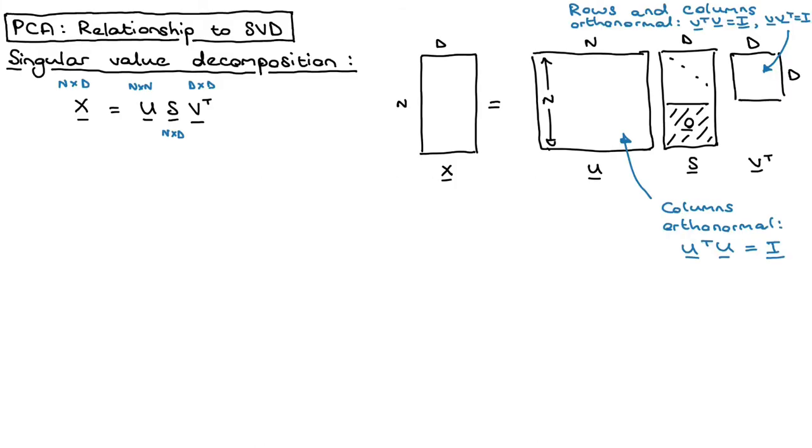Singular value decomposition, if you go on Wikipedia, you will see that it's a generalization of eigenvalues and eigenvectors. Specifically, it's a decomposition method that takes one matrix X and decomposes it into three other matrices, which has some useful properties.